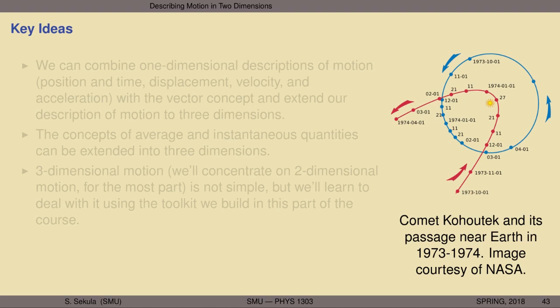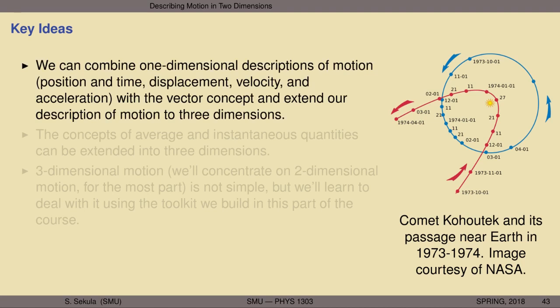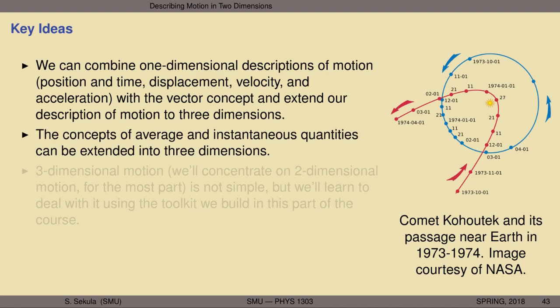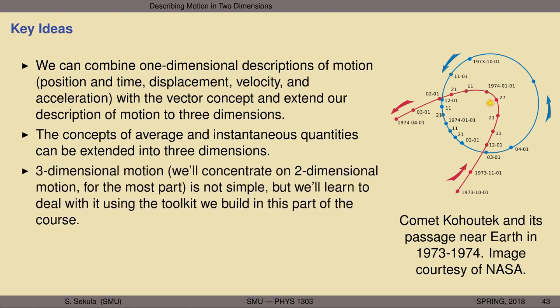The key ideas we will encounter in this section are as follows. We will learn that we can combine one-dimensional descriptions of motion — position, time, displacement, velocity, and acceleration — with the vector concept and extend our description of motion to the full three spatial dimensions. Average and instantaneous quantities can also be extended into three dimensions. We will primarily concentrate on two-dimensional motion and learn how to deal with it using the toolkit we build in this part of the course.